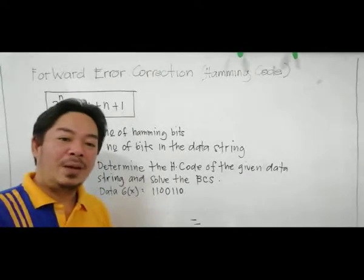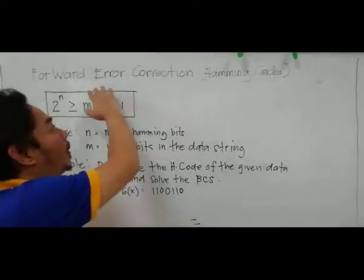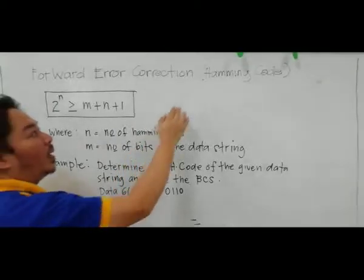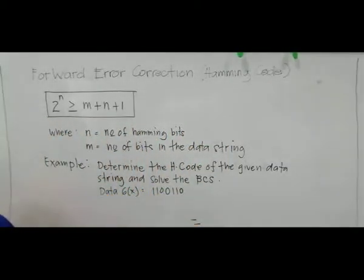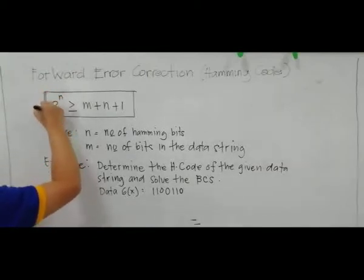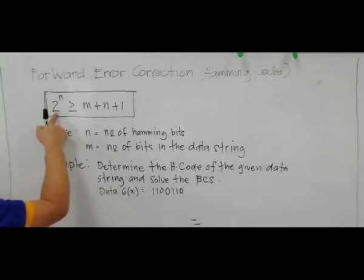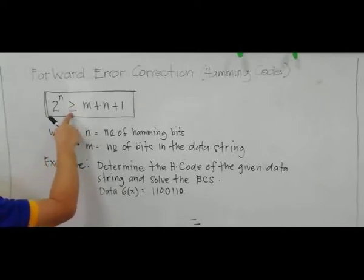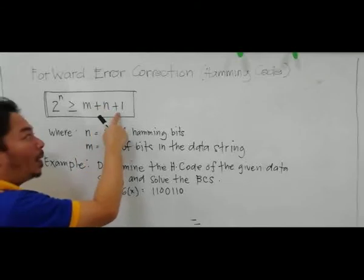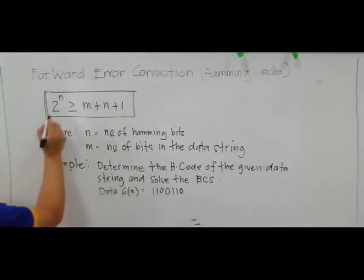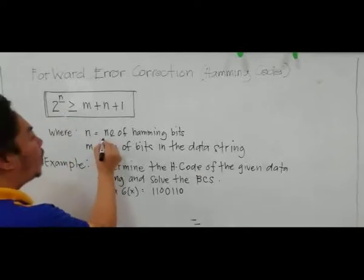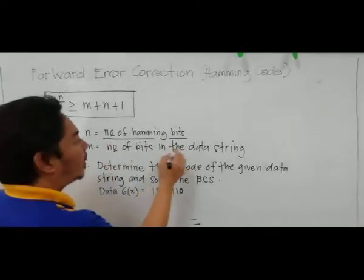Good day everyone. Today's topic is Forward Error Correction, or what we call the Hamming code. The formula to determine the number of Hamming bits is: 2 raised to n must be greater than or equal to m plus n plus 1, where n is the number of Hamming bits.